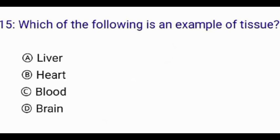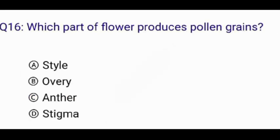Which of the following is an example of tissue? The correct answer is option C: blood. Which part of the flower produces pollen grains? The correct answer is option C: anther.